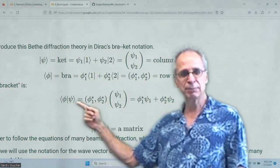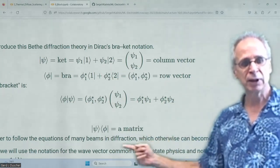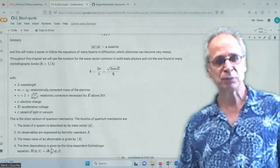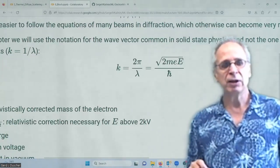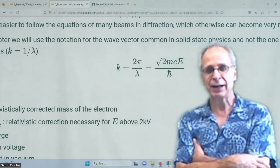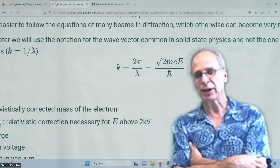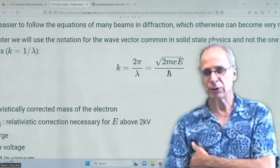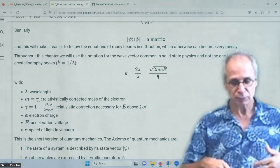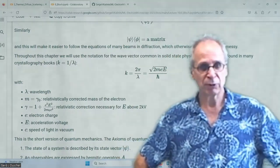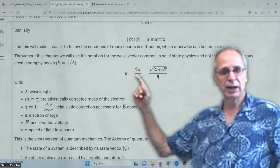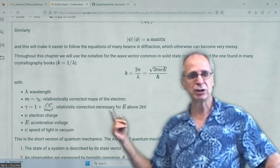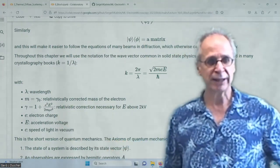If we multiply the bra and ket, we get a value; if we multiply them the other way around, we have a matrix — it's just vector algebra. We switch with our notation so you can go back to any quantum mechanics book. Now we are looking for 2π over λ. This is important because that is what people use when writing the image simulation programs. We have the wavelength, the relativistically corrected mass of the electron, a relativistic correction for the energy, electron charge, acceleration voltage, and speed of light.